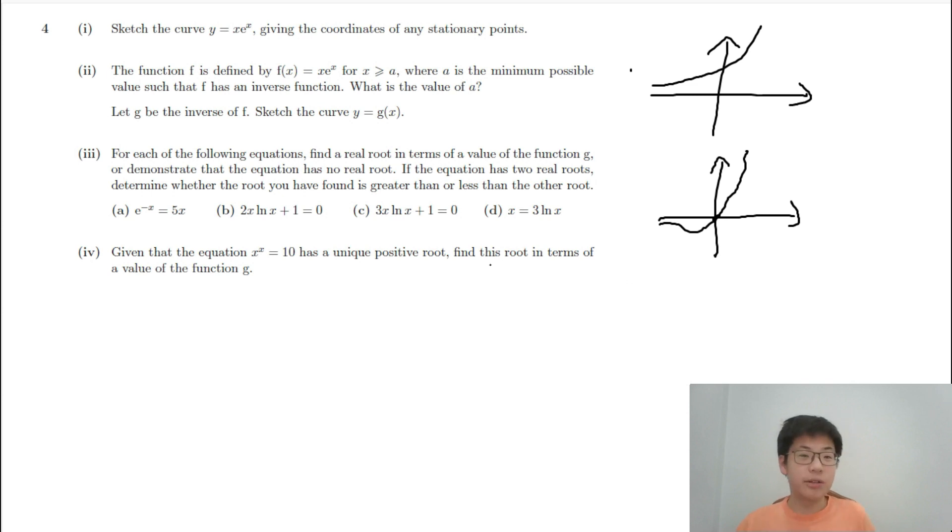Now what is the stationary point? To find the stationary point, we have to do differentiation. For x*e^x, the gradient is surprisingly easy. It is just this, by product rule.